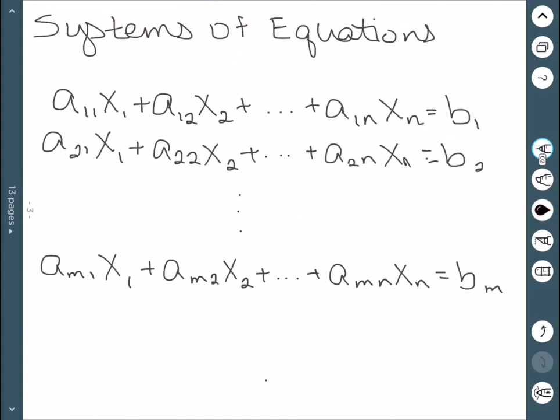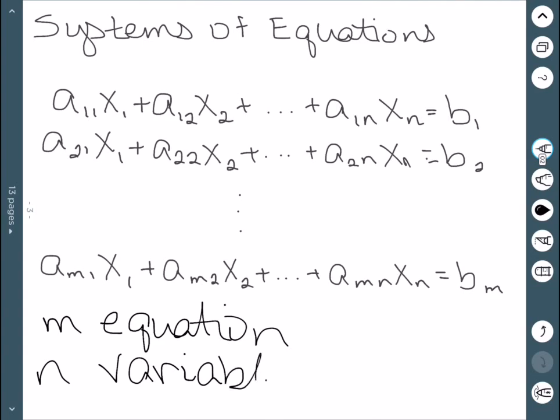When we're looking at a system of equations, this is just a set of several equations. So in this particular example, we have a set of m equations and n variables. So these two numbers do not necessarily need to be the same. The main thing is it's just a set of linear equations that we're going to be solving all at once.